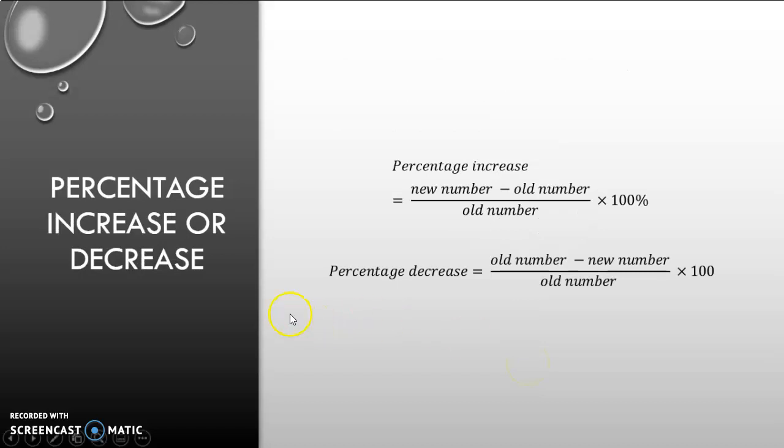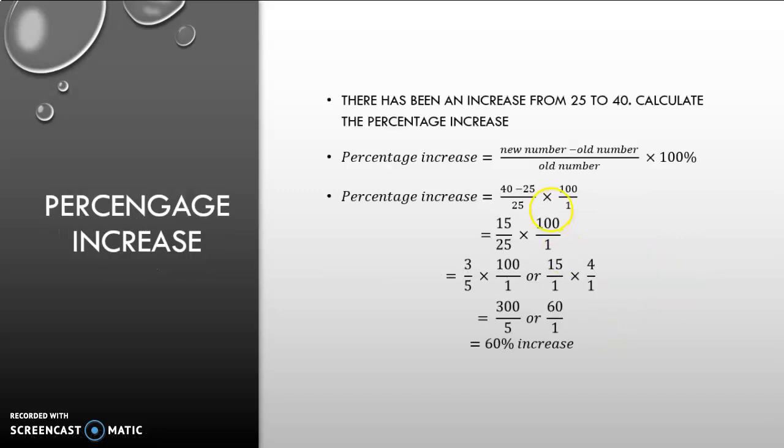Then we are going to look at percentage increase or decrease. And we have formulas for this. Percentage increase: I take my new number, subtract my old number, I divide it by my old number. Remember that fraction line represents division. And then I multiply it by 100%. 100% I can then write as 100 over 1. Percentage decrease: I take my old number, subtract my new number, I have it over my old number, and I multiply with 100. Let's look at two examples. There has been an increase from 25 to 40. Calculate the percentage increase.